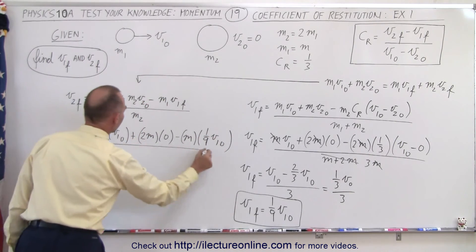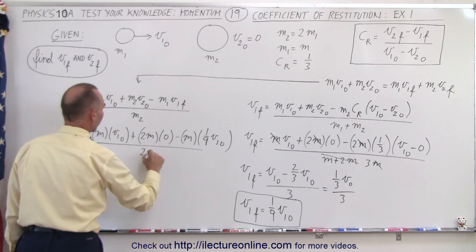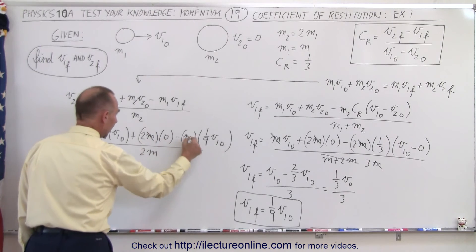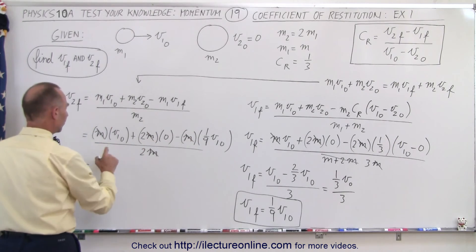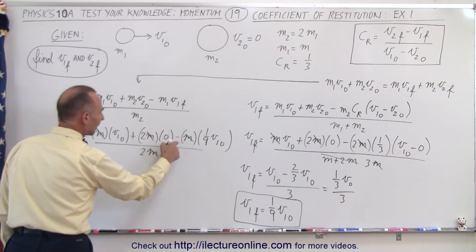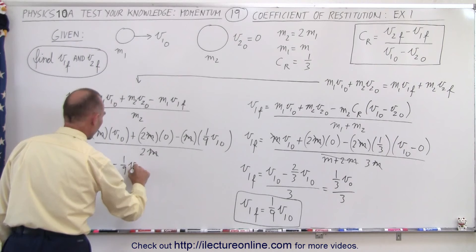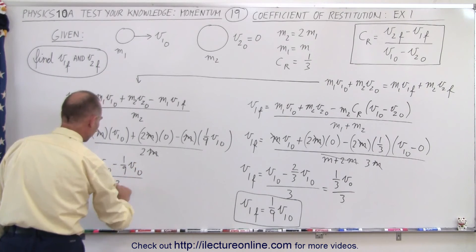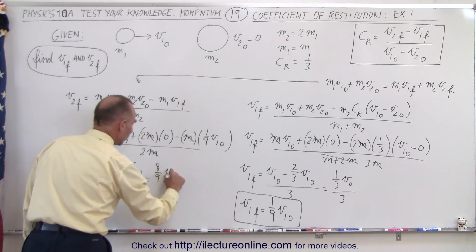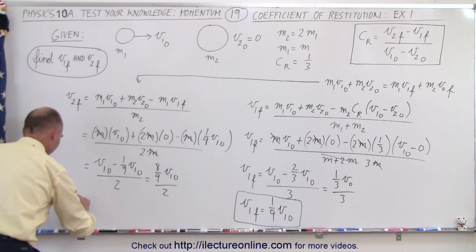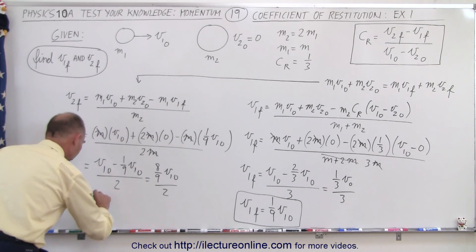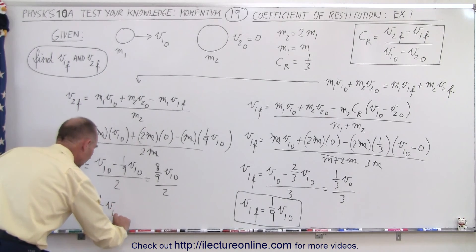All of that is divided by m2, which is 2m. Every term contains an m, so we can cancel the m's and simplify. This is equal to v1 initial, the zero term drops out, minus one-ninth v1 initial, all divided by 2. So 1 minus one-ninth equals eight-ninths v1 initial, divided by 2. Therefore v2 final equals half of that, which is four-ninths v1 initial.